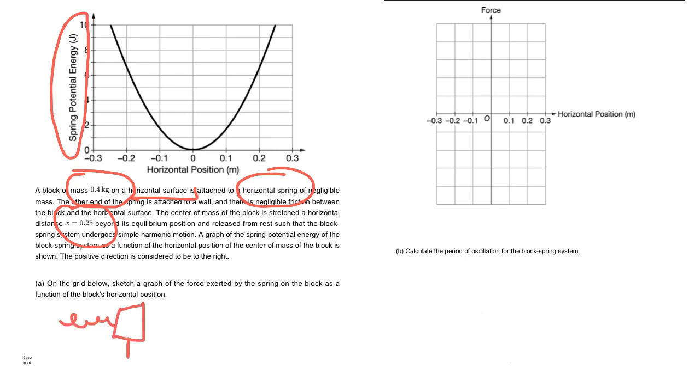Here's our mass. We're going to pull it back a certain distance, 0.25, and let it go, right? And it's just going to go back and forth in simple harmonic motion.